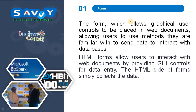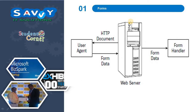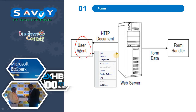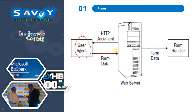HTML forms allow users to interact with web documents by providing GUI controls for data entry. The HTML side of the form simply collects the data. The user agent sends form data as a request to the server, that server sends it to a form handler, and again the response will be given back to the user agent.